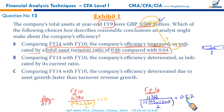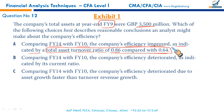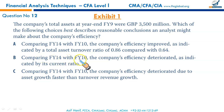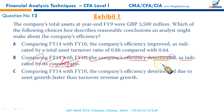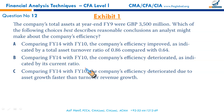Option A claims efficiency improved — wrong, it deteriorated. Option B says efficiency deteriorated as indicated by the current ratio — wrong, current ratio measures liquidity, not efficiency. Option C states efficiency deteriorated due to asset growth being faster than turnover growth — this is the correct explanation since the business combination added more assets proportionally than it added sales.